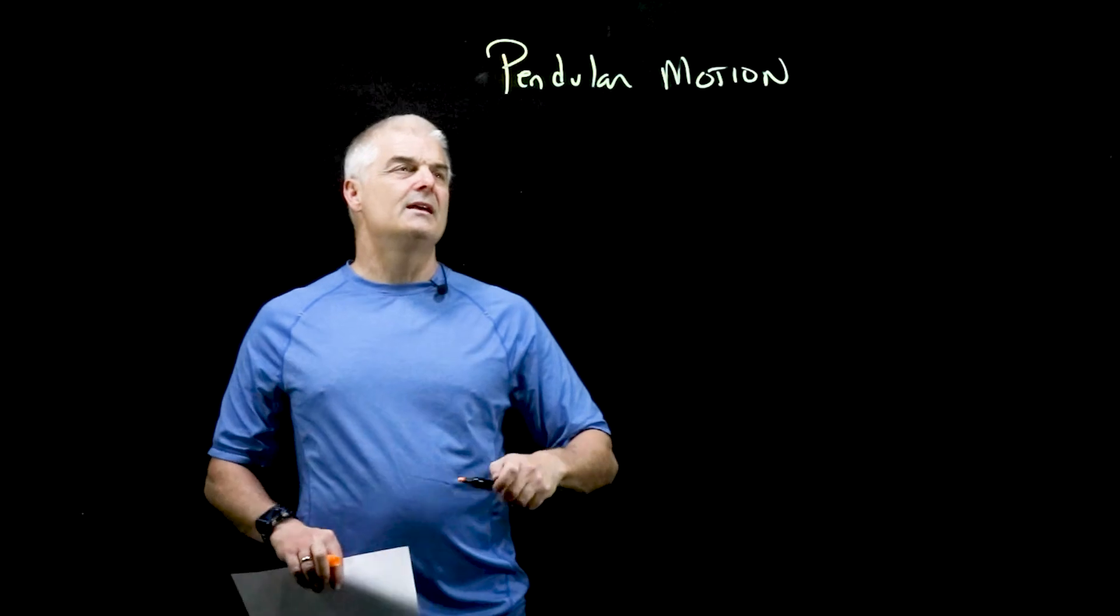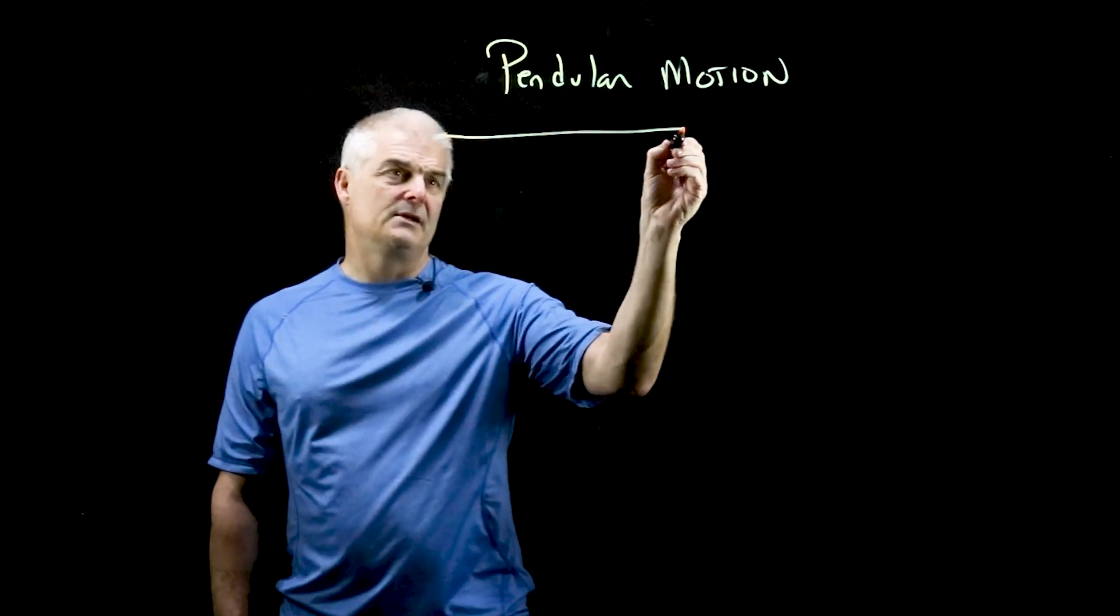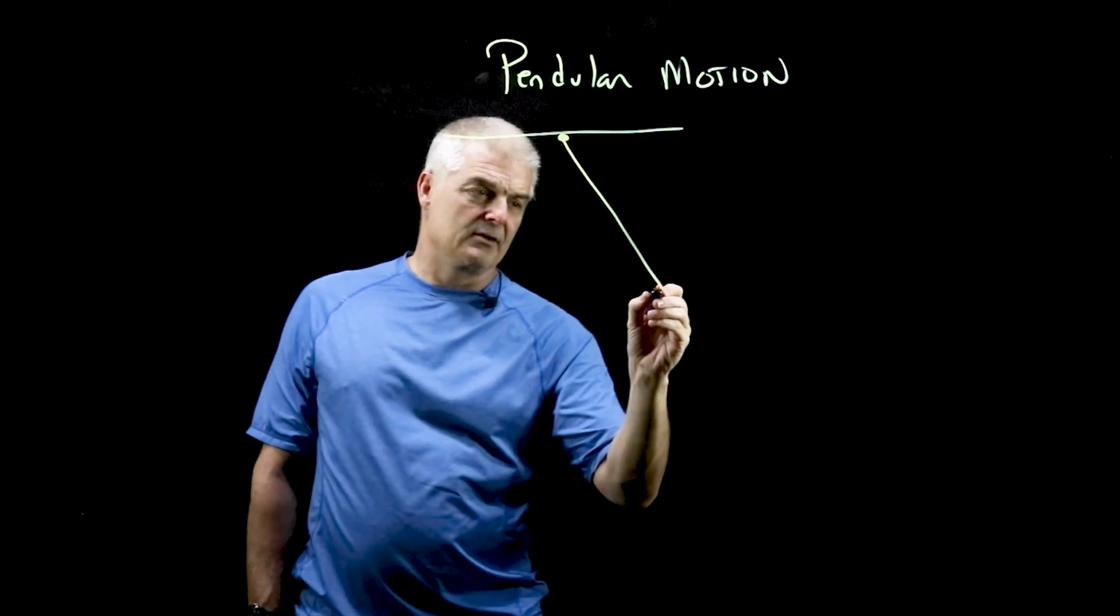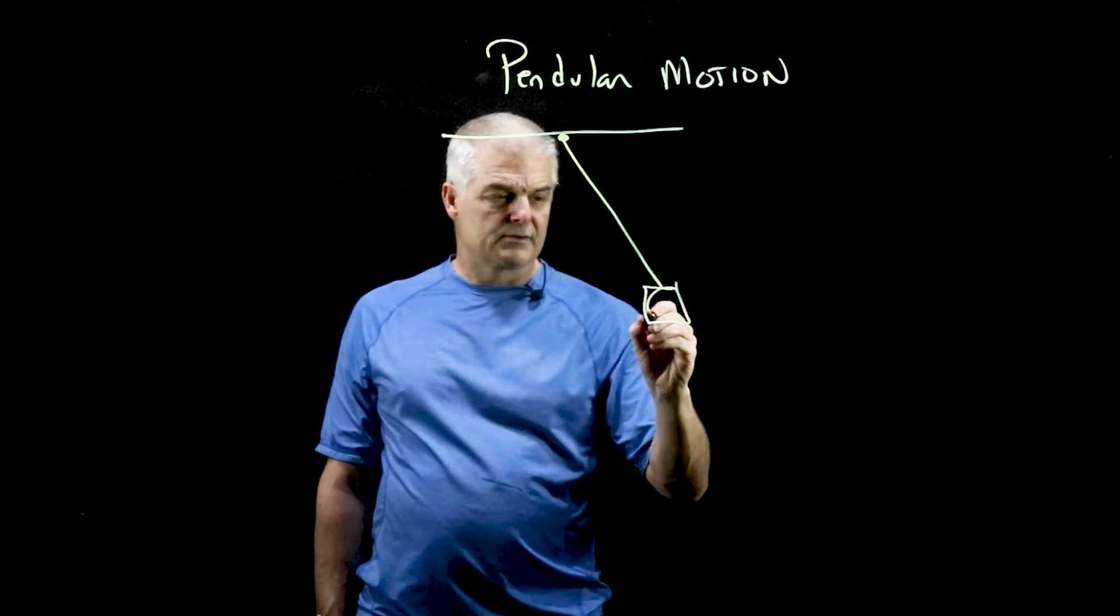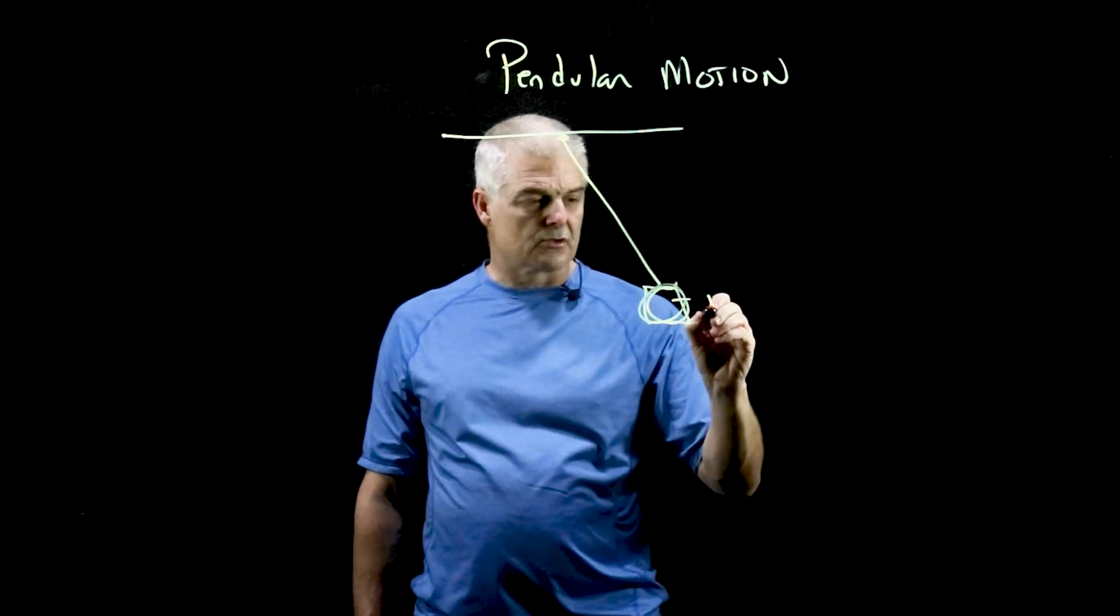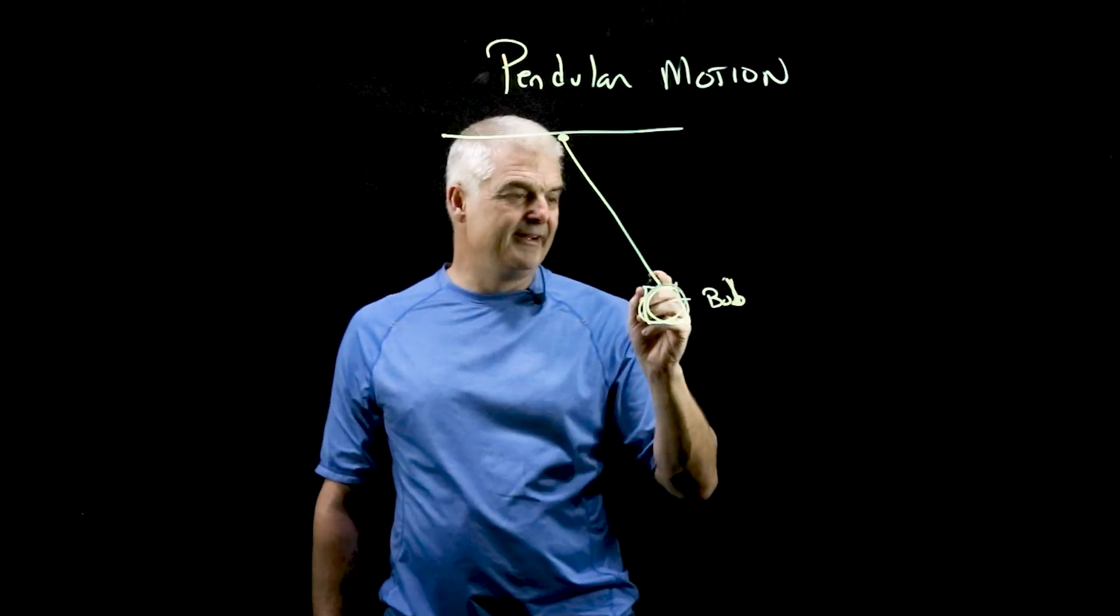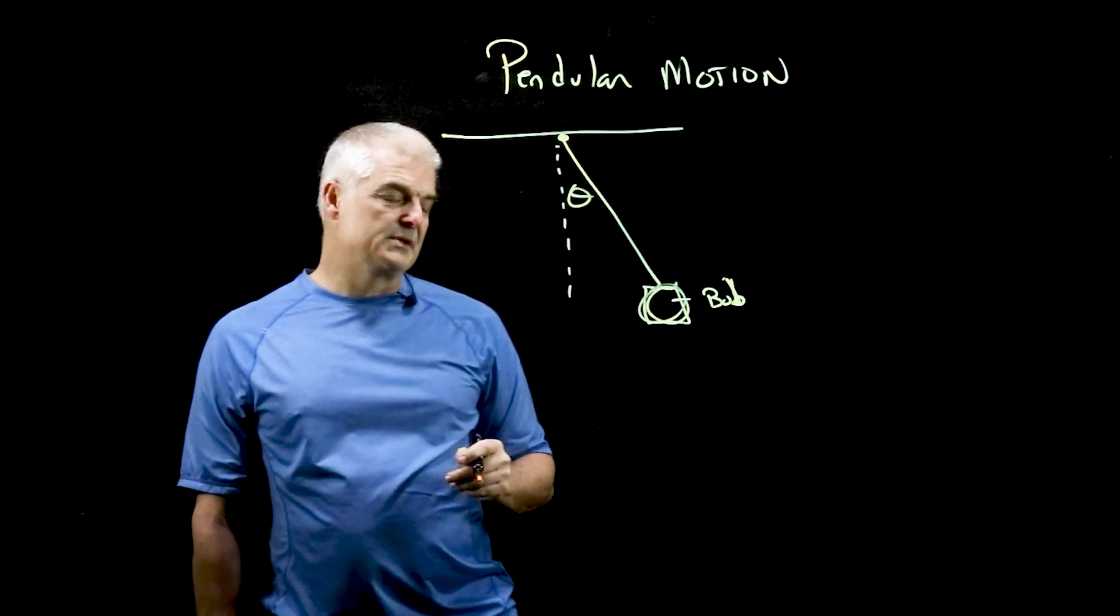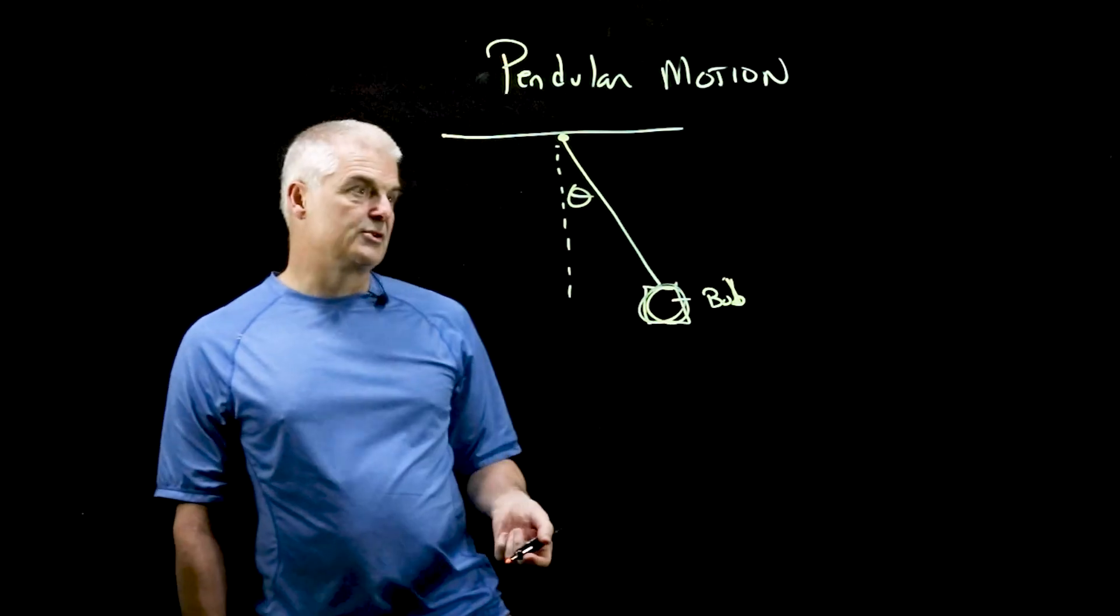So what is a pendulum? A pendulum is something that's hanging. I'm going to put it at an angle. Sometimes it's a circle. We actually call the circle a bob. Bob, not bod. There will be some angle, and it's going to go back and forth.